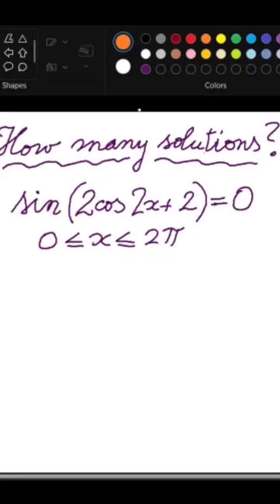How many solutions has this equation between 0 and 2 pi?